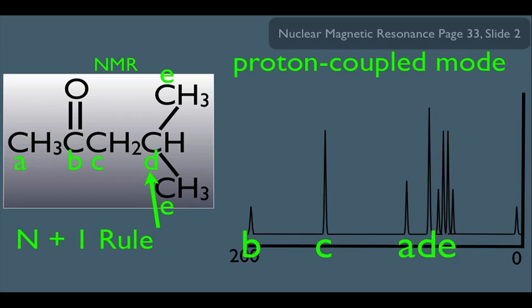Let's look at the D type carbon. How would he be split in the proton-coupled mode? Well, here he is, our D signal. Notice, since the D carbon has one hydrogen connected to him, his N value is 1. 1 plus 1 is 2, so we should expect to see a doublet for the D signal.